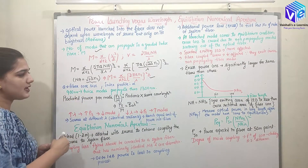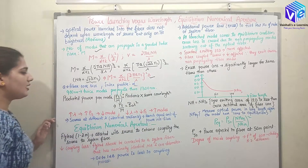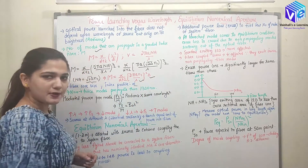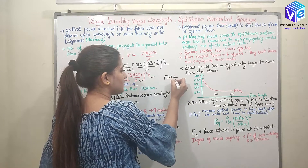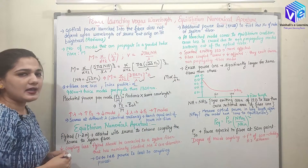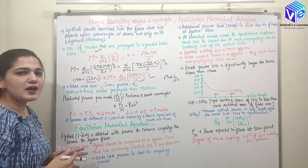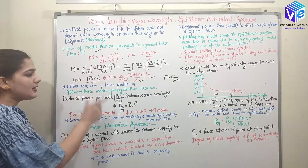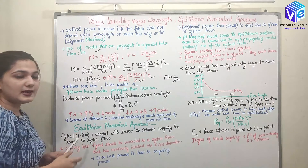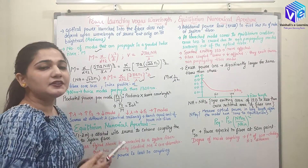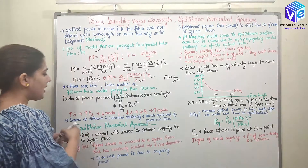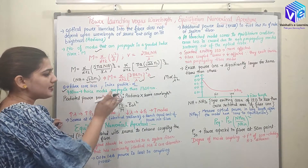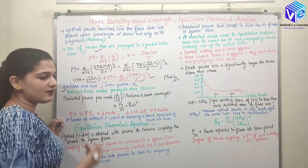Here a is the fiber core size and α is the index profile parameter. The number of modes is inversely proportional to λ². So if I increase lambda, the number of modes decreases. For 1300 nm light there are fewer modes, and for 900 nm light there are twice as many modes as for 1300 nm.